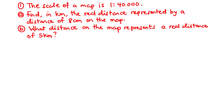Example 1: The scale of a map is 1 is to 40,000. Part A: Find in kilometers the real distance represented by a distance of 8 centimeters on the map. Part B: What distance on the map represents a real distance of 5 kilometers?